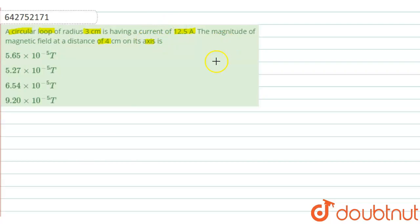As in this question, we have a circular loop and we have to find the magnetic field at the axis of this loop.